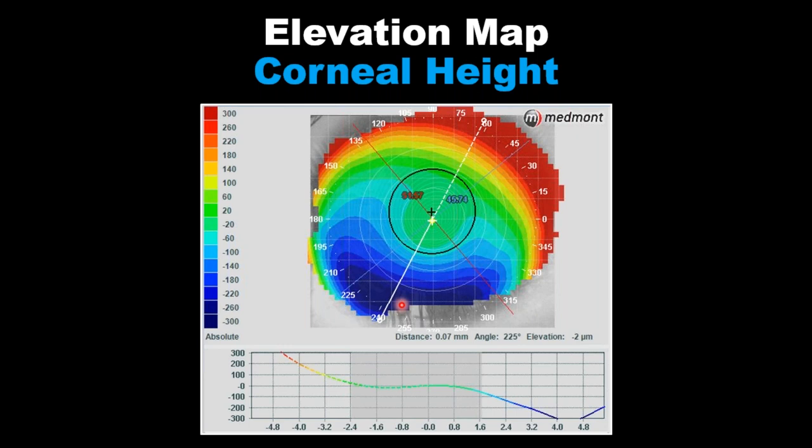Now you've seen this patient's axial map and tangential map, and now you've seen the elevation map. Is this a patient that we could fit in a corneal GP, or is this a patient that requires a scleral lens? La pregunta es: usted vio el mapa axial, el mapa tangencial y ahora el mapa de elevación — ¿pudiera adaptar un lente de contacto gas permeable corneal o tiene que irse automáticamente a un lente escleral?